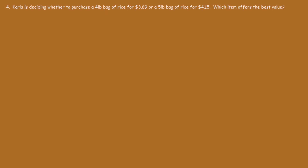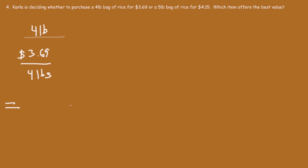Number 4. Carla is deciding whether to purchase a 4-pound bag of rice for $3.69 or a 5-pound bag of rice for $4.15. Which item offers the best value? She needs to determine the unit price — that is, the cost per pound. For the 4-pound bag, the unit price is the cost divided by the weight: $3.69 divided by 4 gives a unit price of $0.9225 per pound.